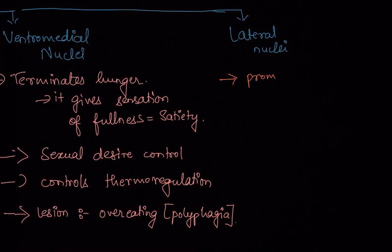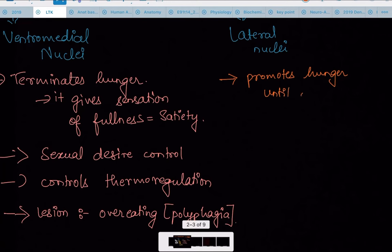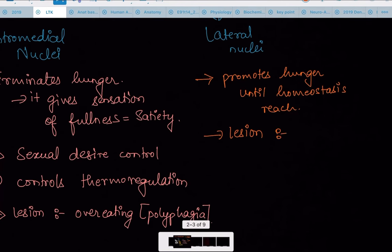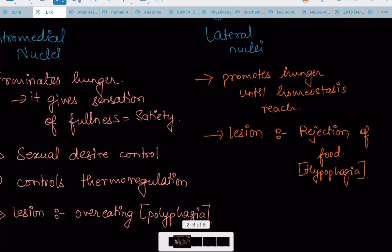The fourth nucleus is the lateral nucleus, which promotes hunger. If you're feeling hungry, it's the lateral nucleus making you feel that way. It promotes hunger until homeostasis is reached, at which point the ventromedial nucleus terminates hunger. If there's a lesion to the lateral nucleus, it causes rejection of food — termed hypophagia. Remember: stimulation of the lateral nucleus promotes hunger; lesion causes rejection of food.